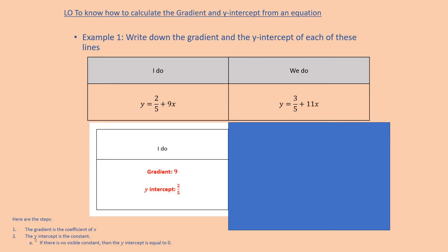Well done. Let's go on to the lesson. So we've been asked to write down the gradient and the y-intercept of each of these lines. Previously in class we've talked about y equals mx plus c, and the coefficient in front of x — the number in front of x — would be the gradient. So the gradient on the example is 9, because the 9 is in front of the x; it is the coefficient of x.